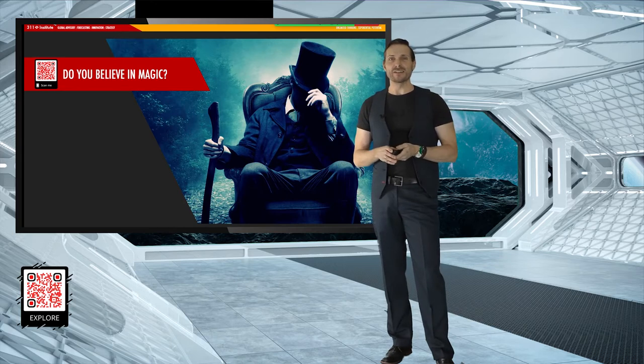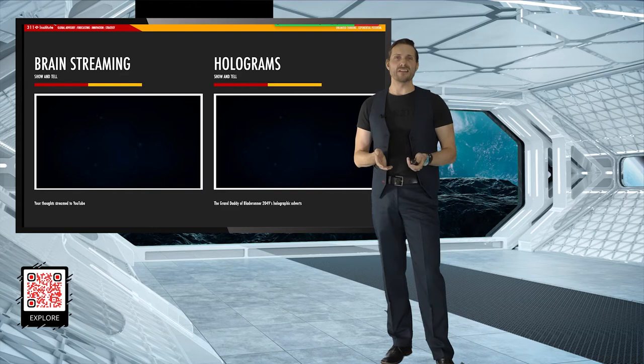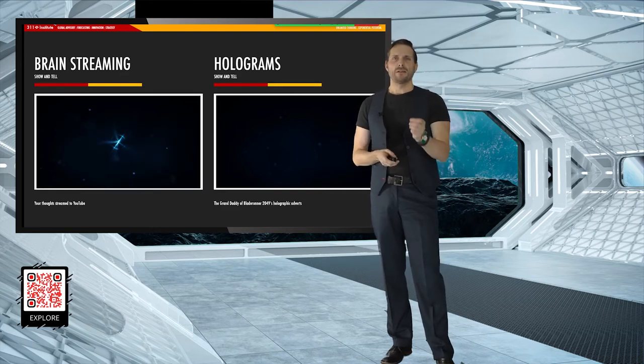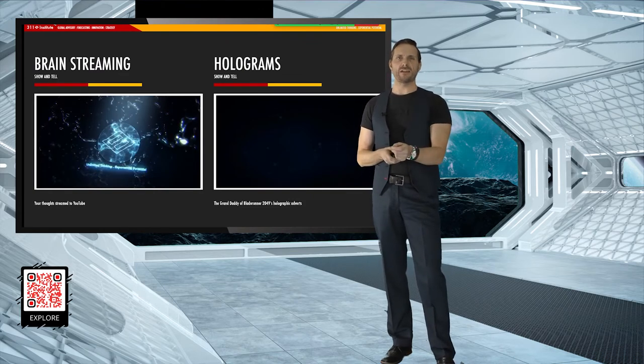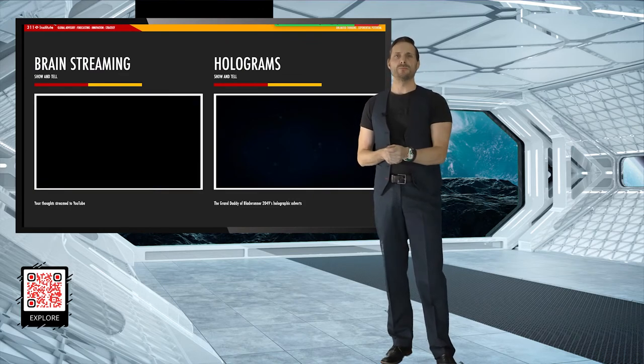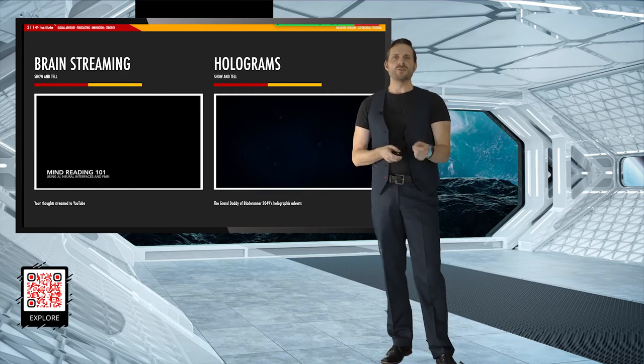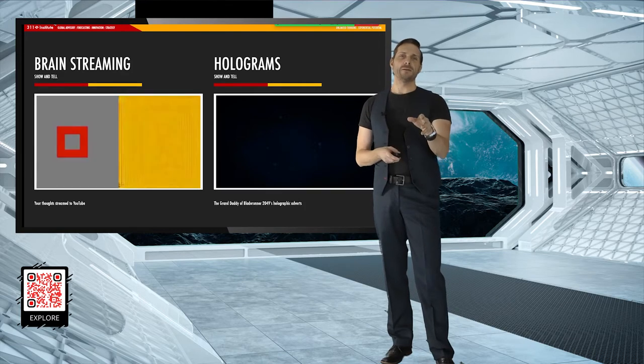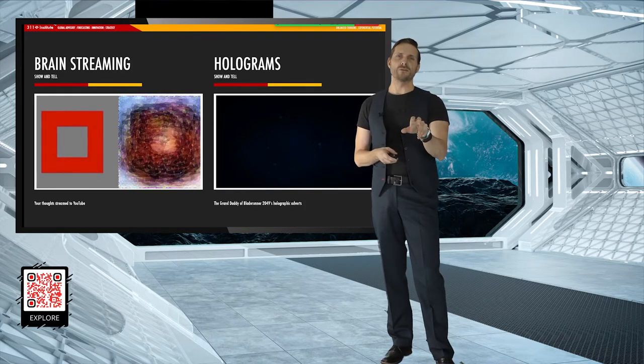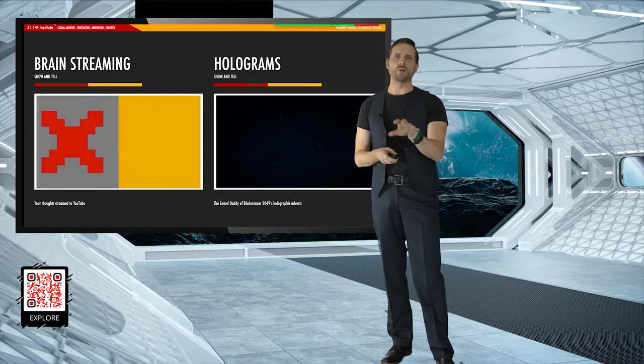Today, we are doing some staggering things. I'm going to show you some of these things. Today, we have the technology to stream your thoughts, the images that you are thinking, directly to YouTube. We do this using brain-machine interfaces and artificial intelligence, and in three years' time, these images will be high definition. Five years ago, we didn't have the technology to do this.